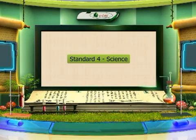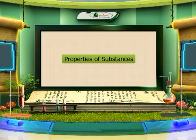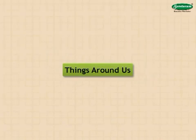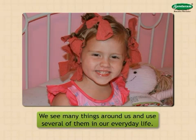Standard 4 Science, Chapter 7: Properties of Substances. Things around us — we see many things around us and use several of them in our everyday life.